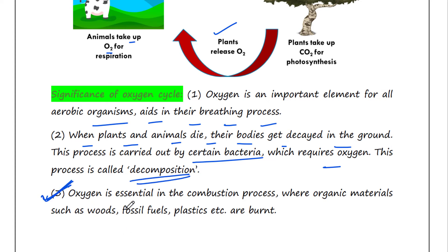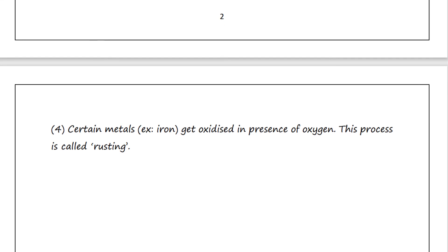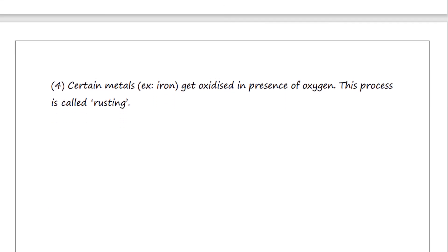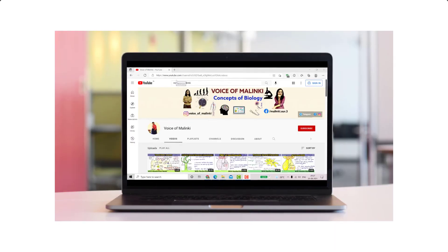Oxygen is also essential in the combustion process, where organic materials such as wood, fossil fuels, and plastics are burnt. Additionally, certain metals such as iron get oxidized in the presence of oxygen, and this process is called rusting.